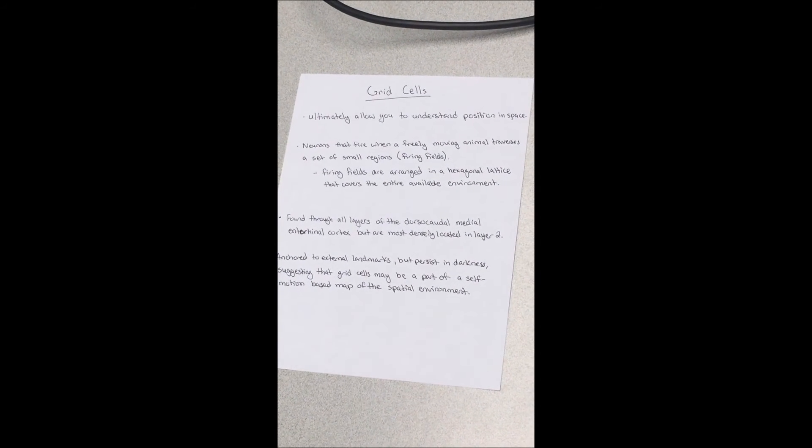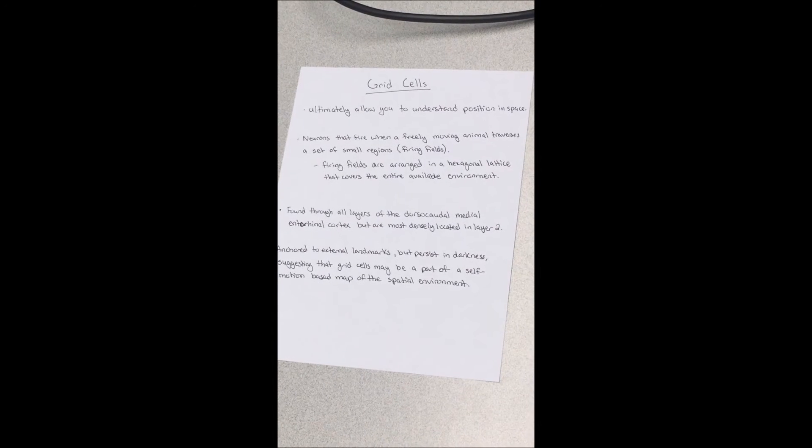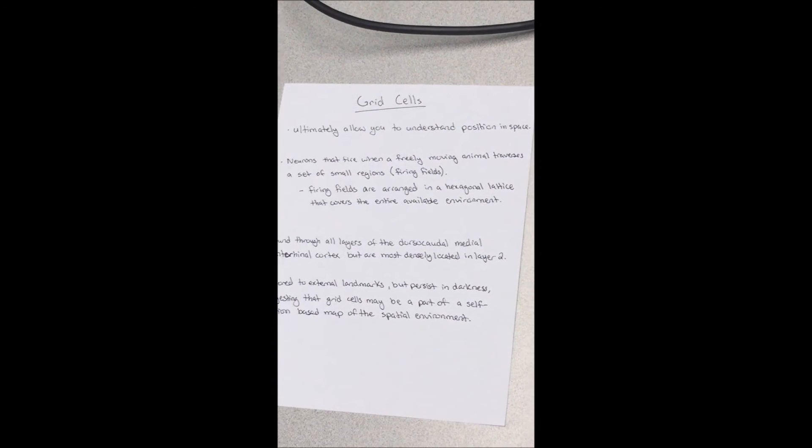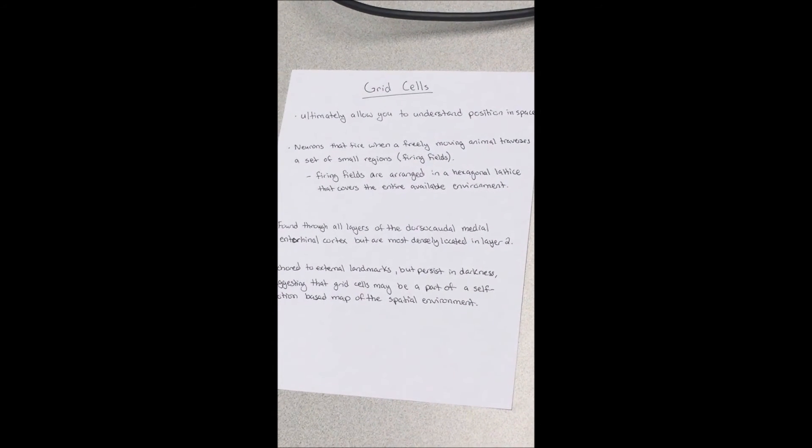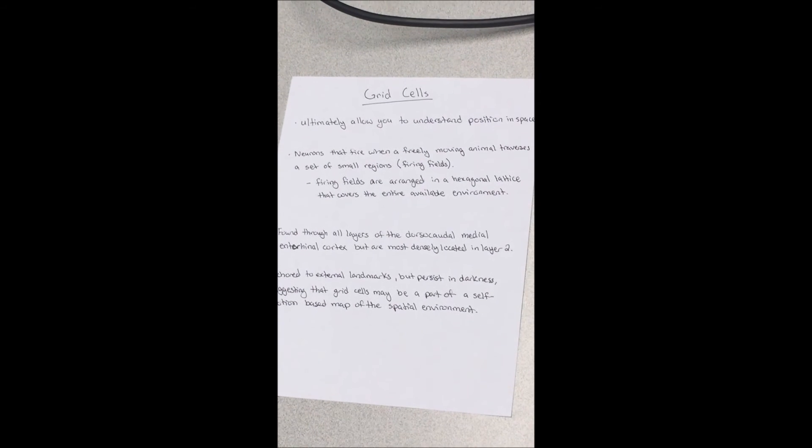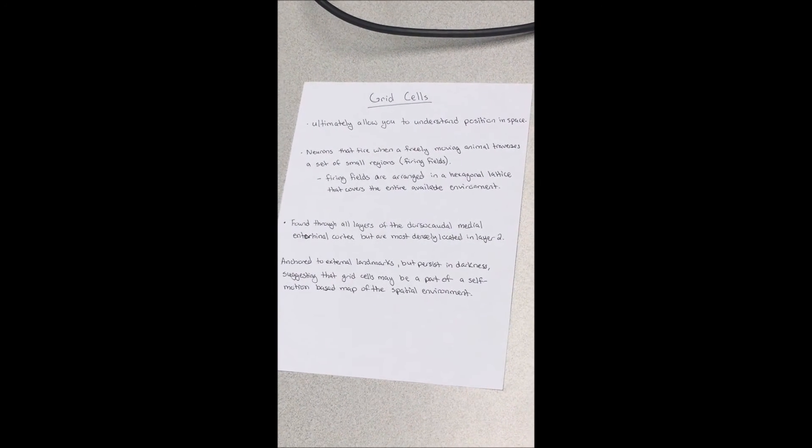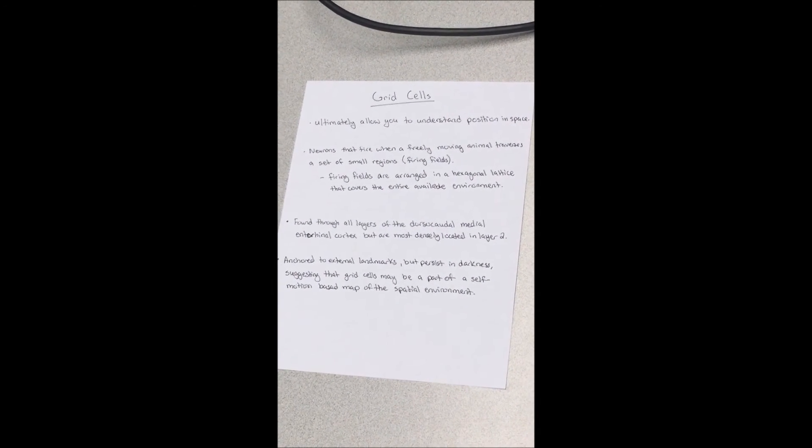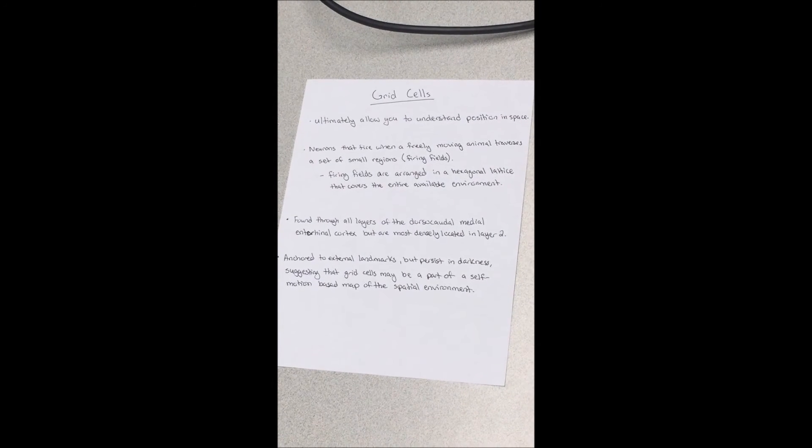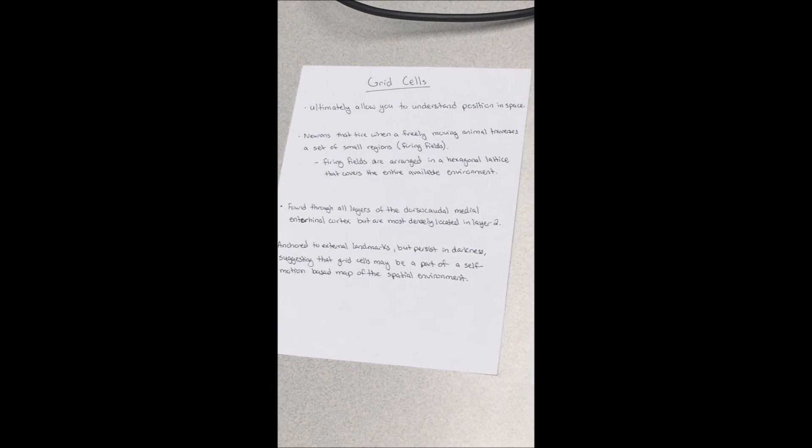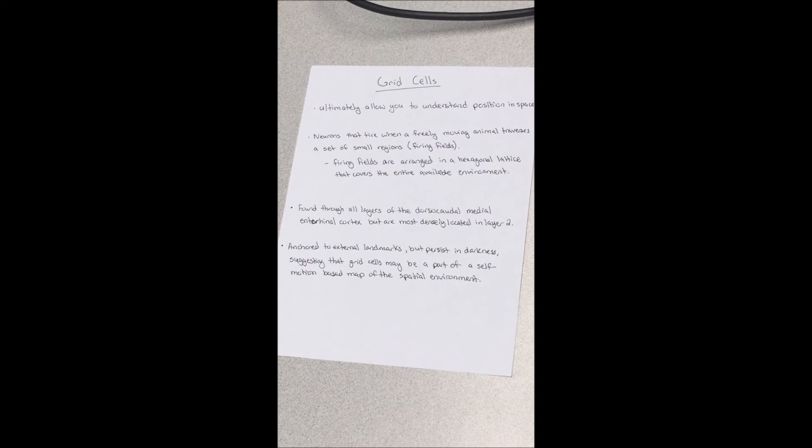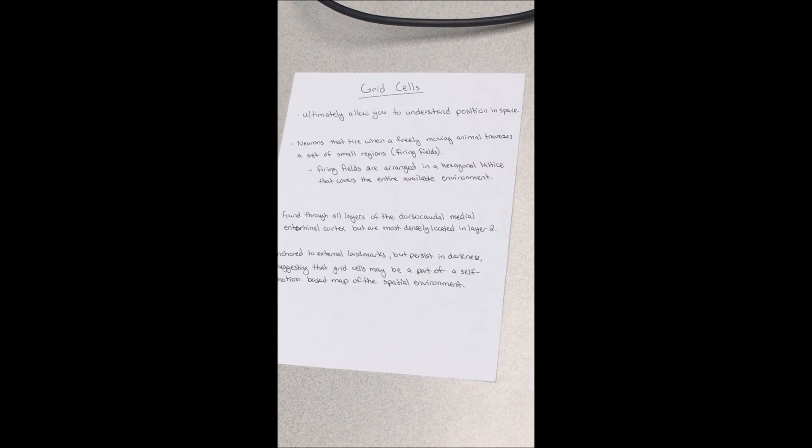Grid cells. Grid cells basically allow you to understand your position in space. Neurons fire when a freely moving animal traverses a set of small regions or firing fields. These firing fields are arranged in a hexagonal lattice that covers the entire available environment. To explain this,